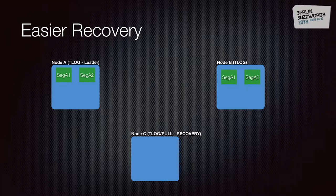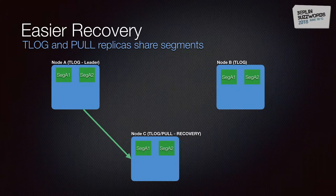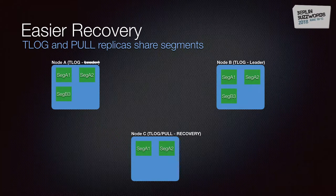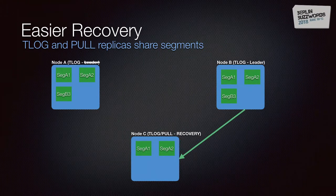The TLOG and TLOG-plus-pull combinations also solve the recovery problem mentioned earlier. With nodes A and B as TLOG replicas and node C as either TLOG or pull in recovery, node C asks the leader for segments, gets A1 and A2, and downloads them. Importantly, node B also has segments A1 and A2 because it's replicating from the same leader. When node C goes into recovery again with node B as the new leader, B has A1, A2, and B3. Since A1 and A2 are already in node C, it only needs to download B3 — making replication incremental again.